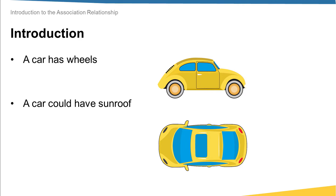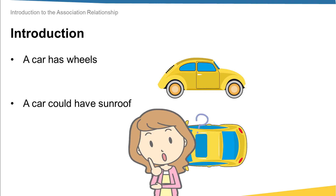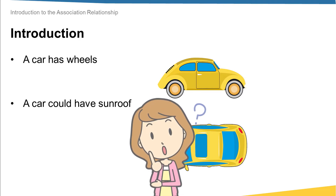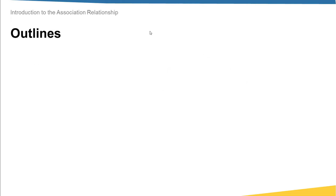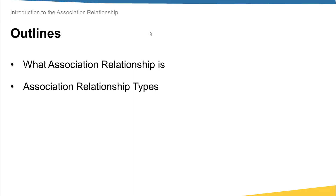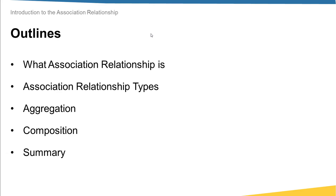From this example I can see that one data type can have objects or entities from other data types, like car and wheels. So what is this relationship, what are the different types of this relationship, and how can we implement this relationship in Python? This is what we will talk about in this lecture and the following lecture. In this lecture we will understand what association relationship is, see the available types, talk shortly about aggregation and composition, and end with a quick summary.